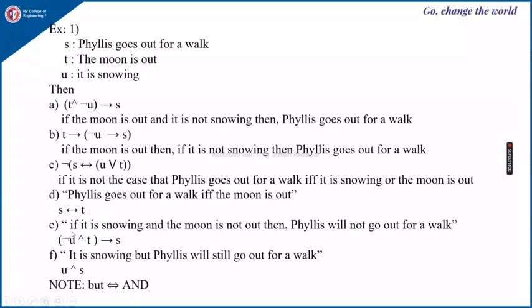The next sentence given is: if it is snowing and the moon is not out, then Phyllis will not go out for a walk. Here it is an if statement, so it is an implication. It is snowing is represented by U, and moon is not means negation of T. If it is snowing, so it is U and not of T implies not S.